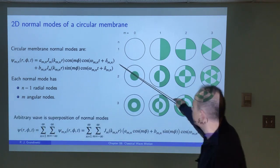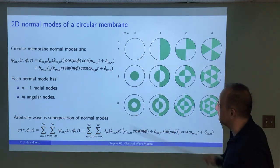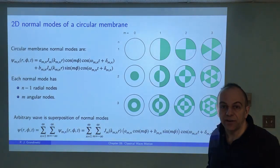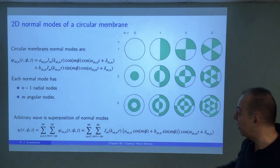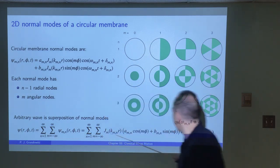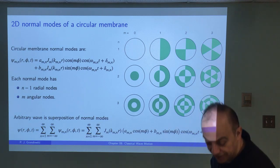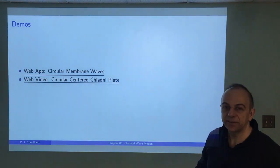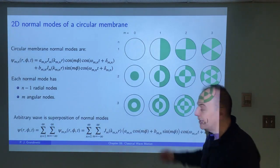The cosine modes shown here can be complemented by sine modes, which are simply rotated 90 degrees and look identical in shape. Finally, any wave function on this membrane — such as one created by hitting the drum with a drumstick — can be decomposed into these normal modes and described by a linear combination of them. In the next video, we'll look at a simulation of these membrane waves that makes it much easier to visualize these patterns and their decomposition.